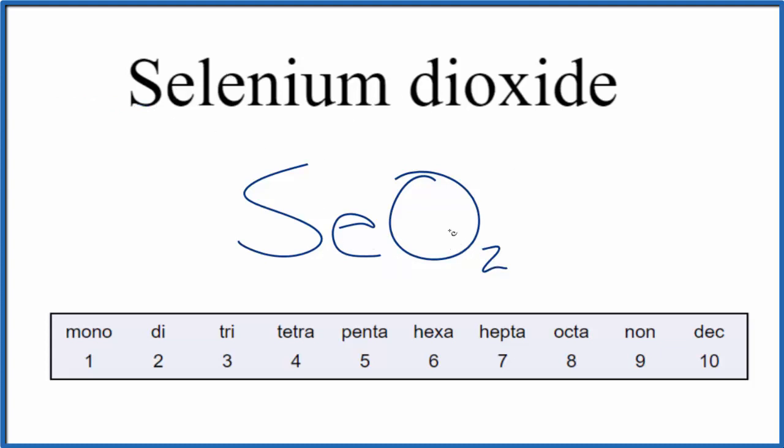And then we have two oxygens, so dioxide. This is Dr. B with the formula for selenium dioxide. Thanks for watching.